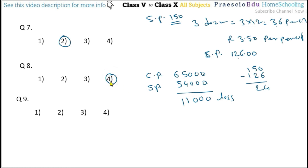Question number 9. Which of the following statements is true? Option 1: If cost price is greater than selling price, then there is a profit — No, this is incorrect because SP should be more for profit. Option 2: If selling price is greater than cost price, then there is a loss — also wrong. Option 3: If selling price is less than cost price, then there is a profit — also incorrect. Option 4: If cost price is less than selling price, then there is a profit — Yes, this is true. So option number 4 is the correct one.